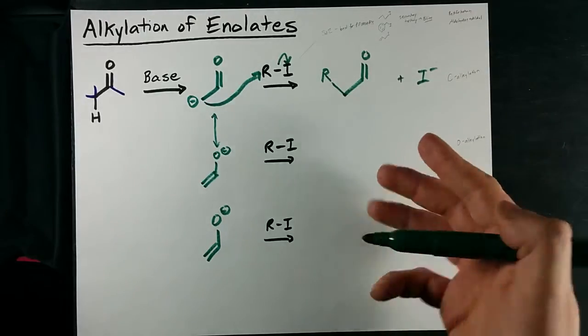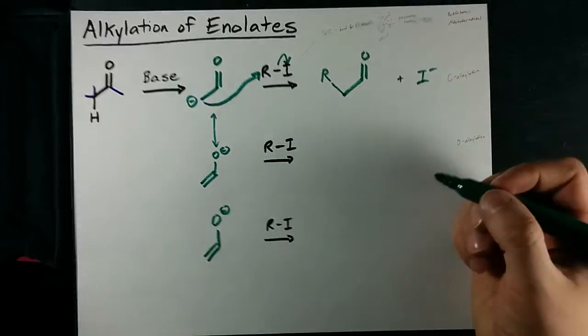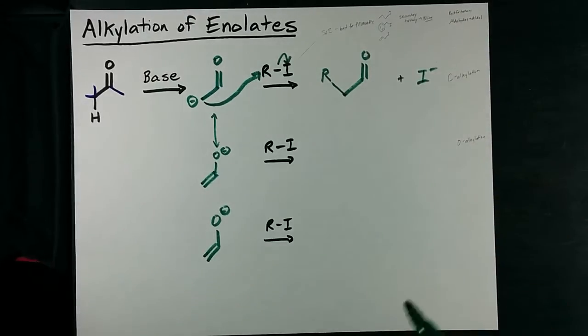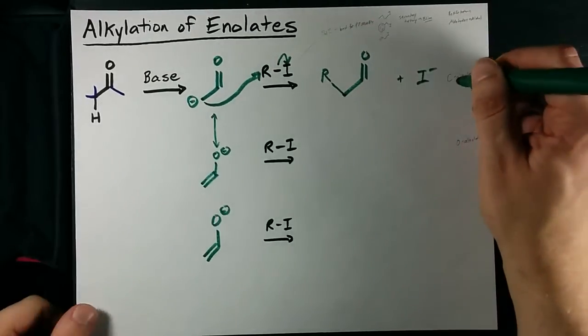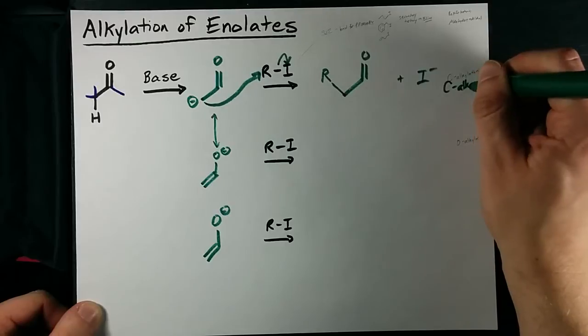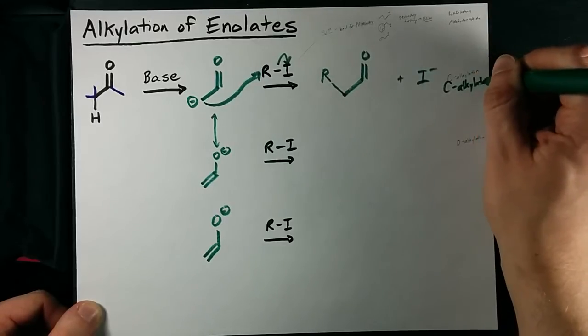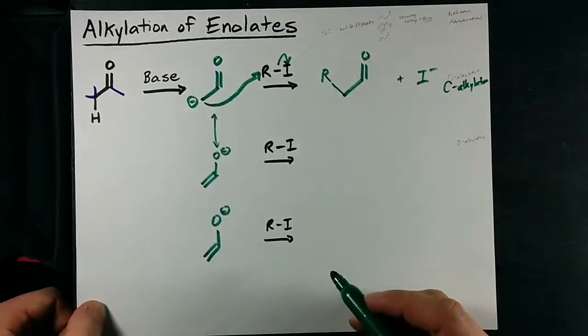We've been able to extend the carbon chain. We love it when we can do that in organic chemistry because it is a little more rare than other kinds of reactions. We call this C-alkylation because we've added the carbon, or we've added the R group to the carbon.